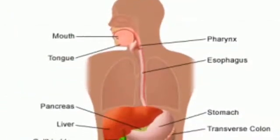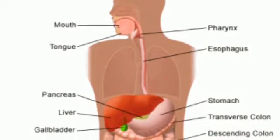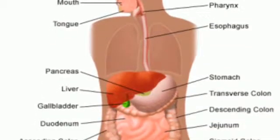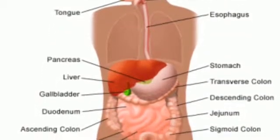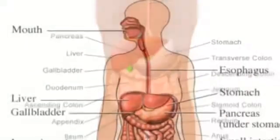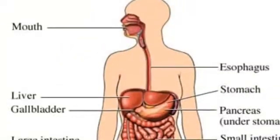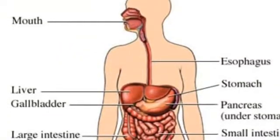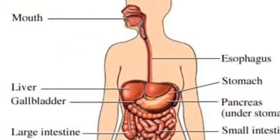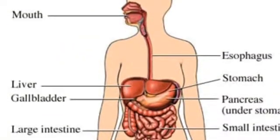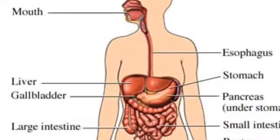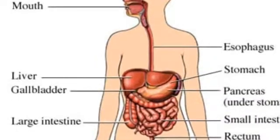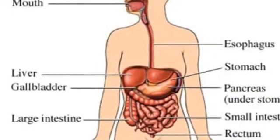Overall, a bite of chicken would go through the oral cavity, esophagus, stomach, small intestine, and large intestine. The digestive system also contains the salivary glands, pancreas, liver, and gallbladder.